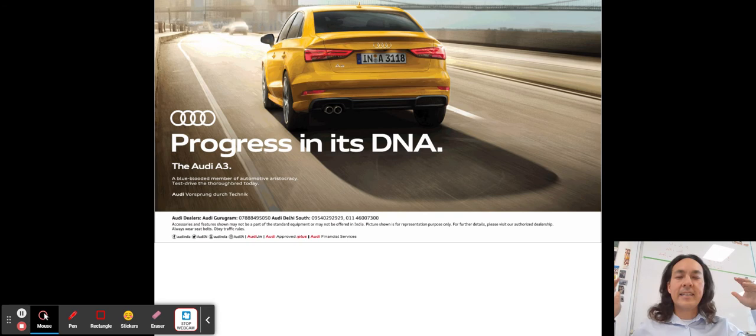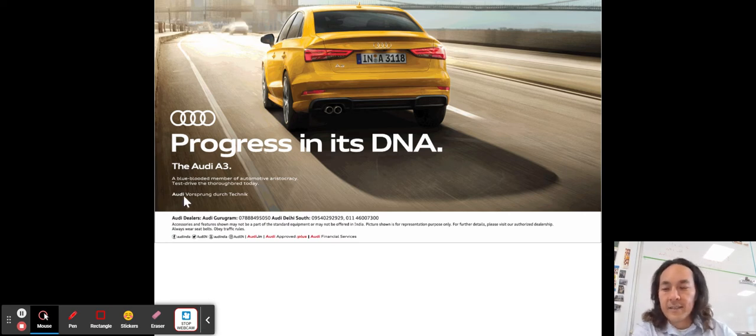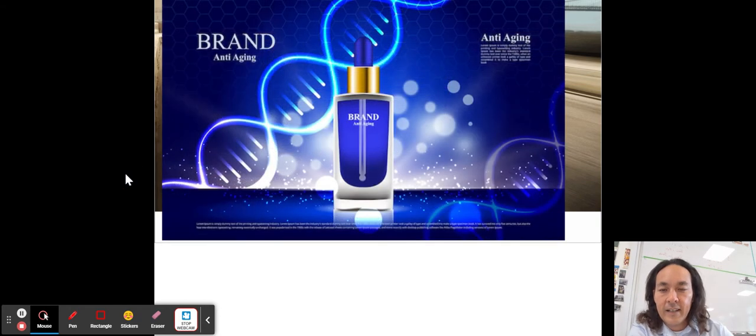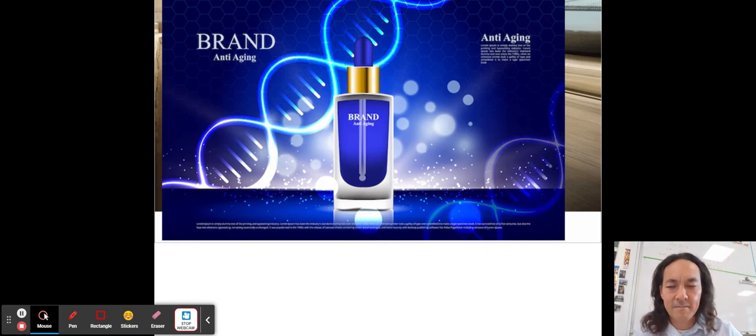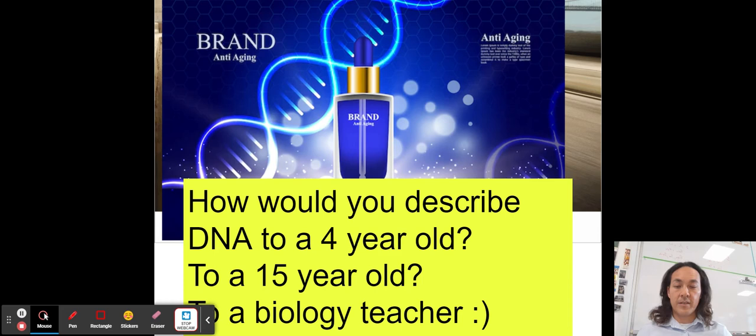So what in the world is DNA, right? We see it everywhere. Everybody talks about DNA. You say it's in my DNA. It's my DNA to be a footballer. It's in my DNA to love a certain sports team, Chelsea or the saints or something else, or here progress is in his DNA for this Audi, right? Here is some type of perfume that's going to make you anti-aging and it has pictures of DNA on it. We see it everywhere, but what is it? Can you describe it? How would you describe it to a four year old? Can you describe it to a 15 year old? How would you describe it to your biology teacher on your assessment? Pause the video. Talk it out.